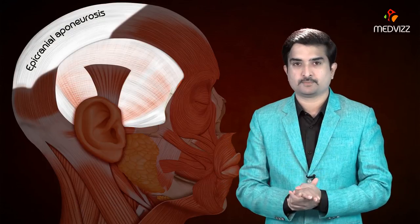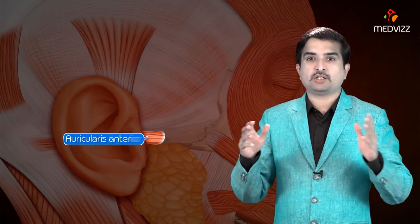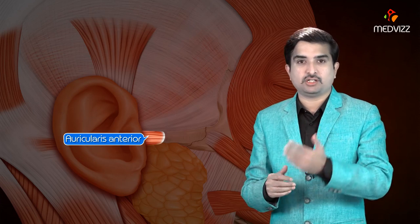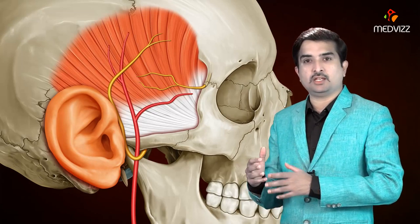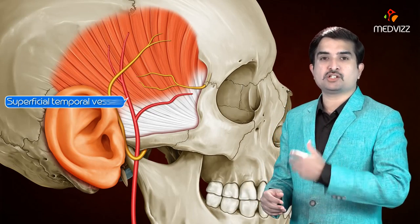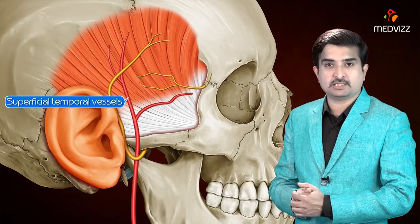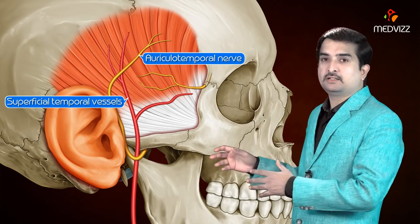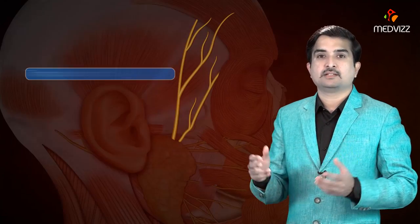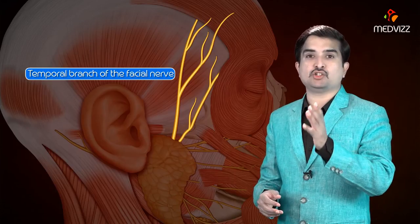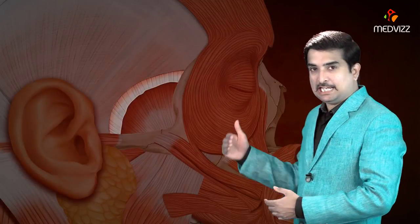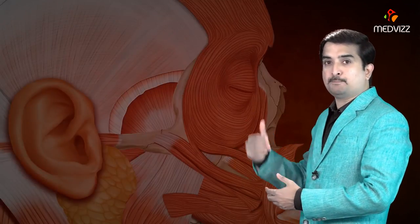The superficial surface of the temporal fascia receives an expansion from the epicranial aponeurosis. This surface gives origin to the auricularis anterior and superior, and it is related to the superficial temporal vessels, the auriculotemporal nerve, as well as the temporal branch of the facial nerve.